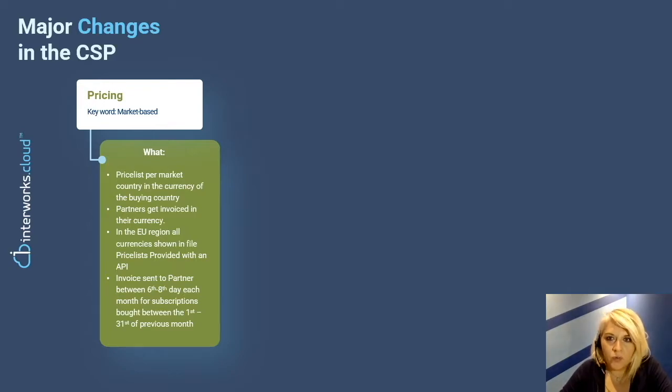A great improvement that we are all happy about is the API provided to get the price list from Microsoft. For Interworks Cloud Commerce Platform customers, this means that they no longer have to download the price list each month to update their prices, but they will automatically get the prices imported into their platform by using our integration with Microsoft. Another important change that is certainly worth mentioning is that all invoices will be sent by Microsoft to you between the 6th and 8th date of each calendar month for products bought between the 1st and the last day of the previous month. And this is offered as an SLA by Microsoft to you.